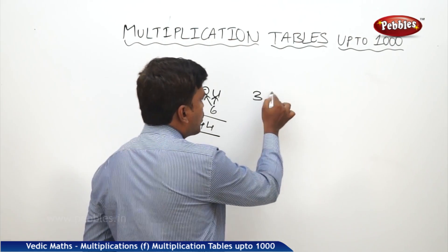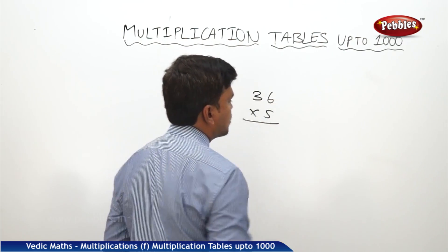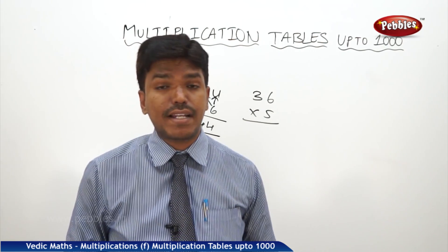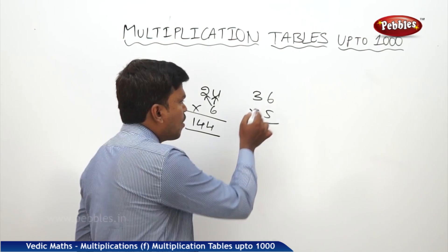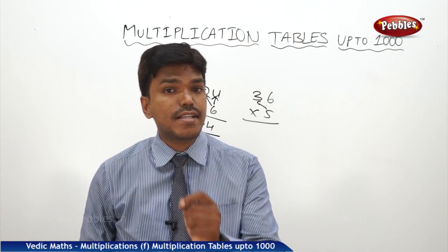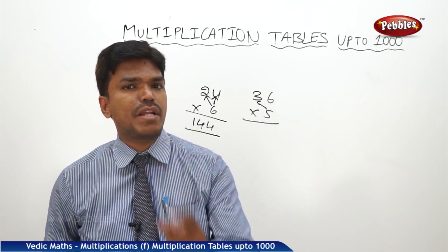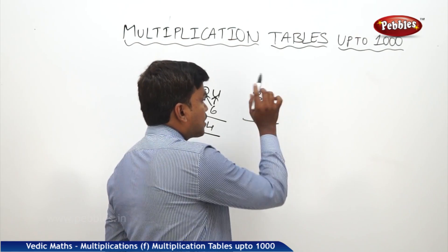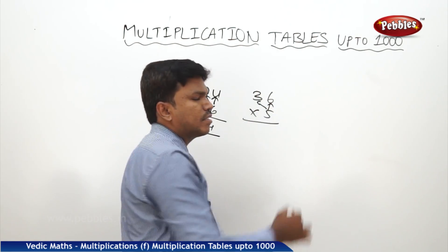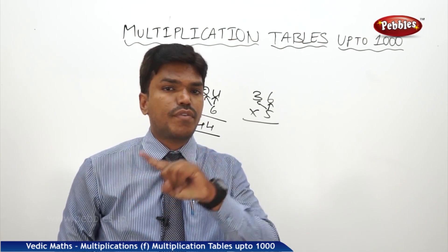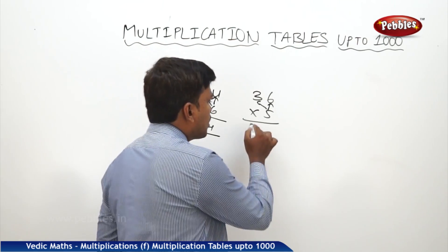One more example. I want to multiply 36 into 5 times. What is 5 threes? 15, but don't take it as 15, take it as 150 and keep in the mind for some time. What is 6 five? 30. What is there in the mind? 150. 150 plus 30, it's 180.